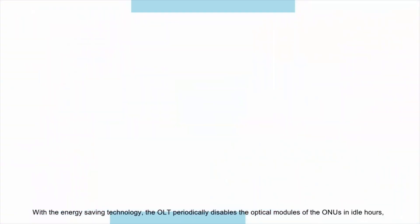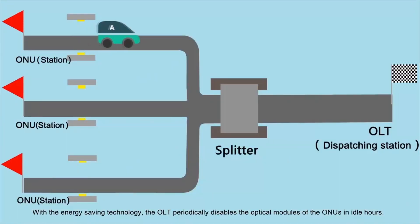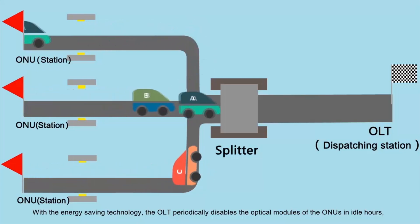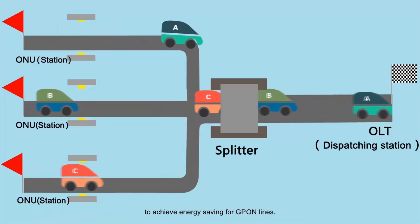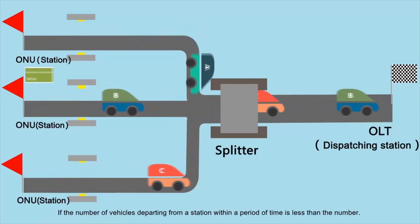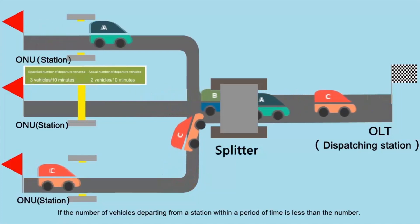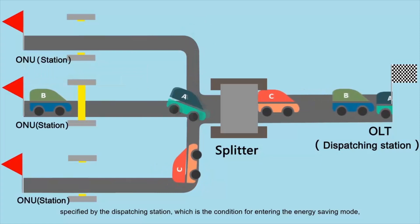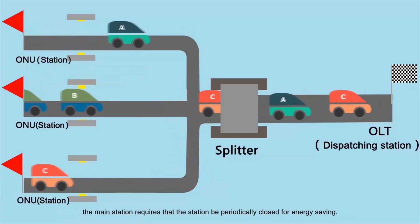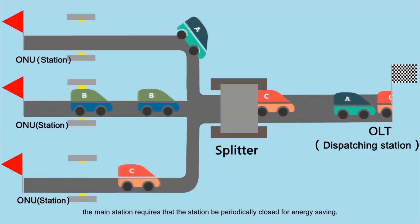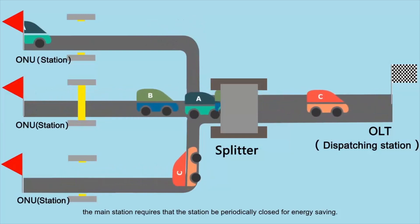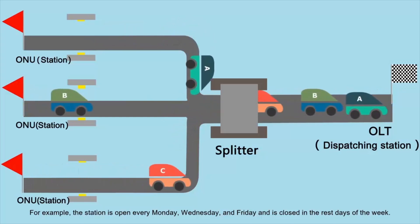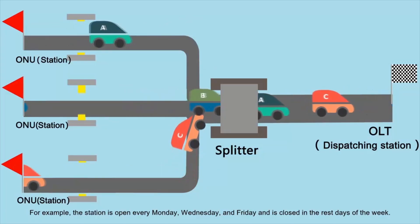PON Energy Saving: With Energy Saving Technology, the OLT periodically disables the optical modules of the ONUs in the idle hours to achieve energy saving for G-PON lines. If the number of vehicles departing from the station within a period of time is less than the number specified by the dispatching station — which is the condition for entering the Energy Saving Mode — the main station requires that the station be periodically closed for energy saving. For example, the station is open every Monday, Wednesday, and Friday, and is closed the rest of the week.